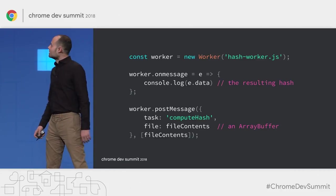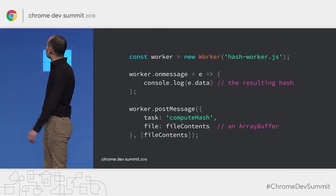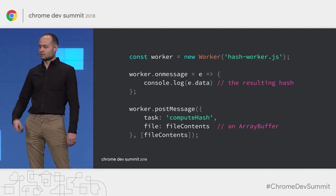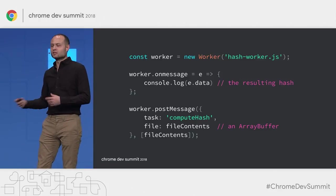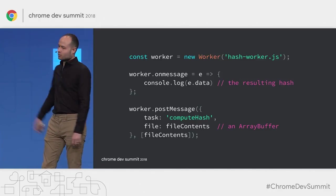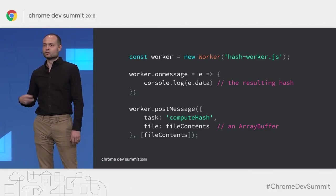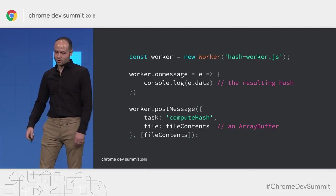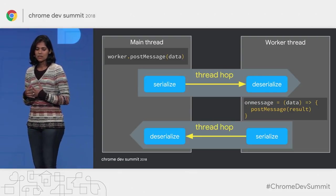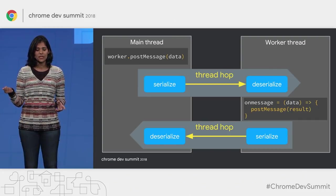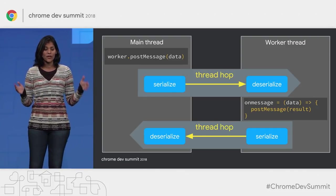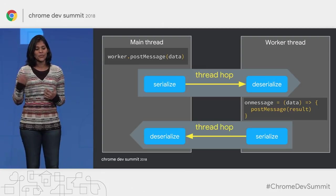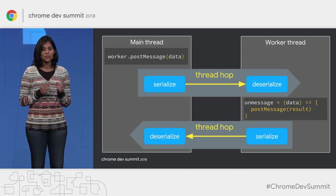The Worker API: you instantiate the Worker constructor and pass it the name of a script, then listen for messages coming back and send messages down. For example, we can send an object describing a computeHash function call and pass the contents of a file as an ArrayBuffer. The second argument to postMessage tells the browser to transfer (rather than structured-clone) the ArrayBuffer. Once computeHash completes, it posts a message back and we're dropped into the message handler. Under the covers, this postMessage incurs serialization on the main thread, queuing, a hop to the worker thread, and deserialization — this is called a thread hop, and it has a cost. The size of the data is relevant to the cost of the thread hop.